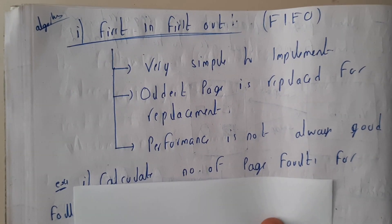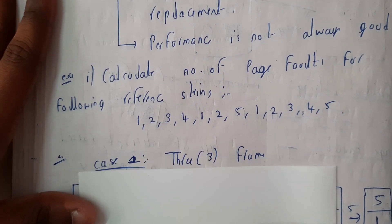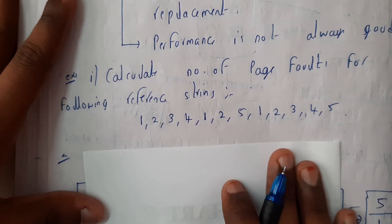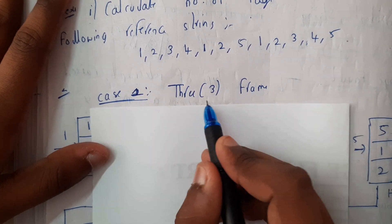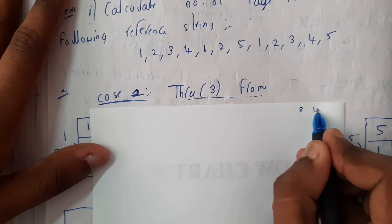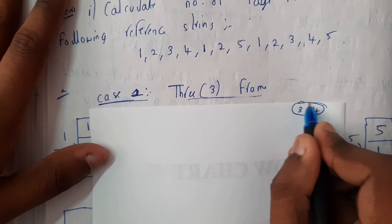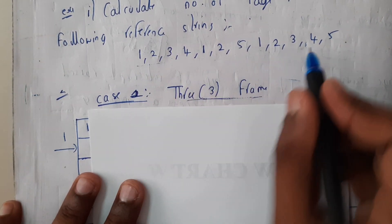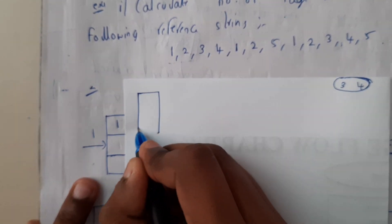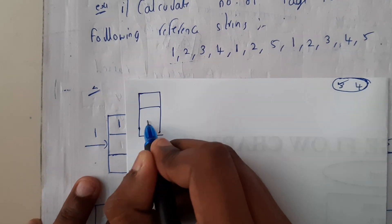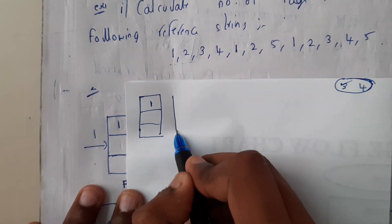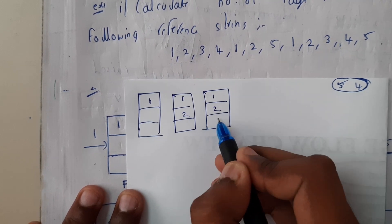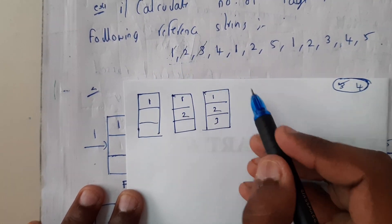Let's take an example. To verify Belady's anomaly, I'll take two cases: one with a frame size of three and another with frame size of four. Initially with three frames: page 1 gets a slot, then page 2, then page 3 — all placed into the three frames. Now the reference string continues with page 4.